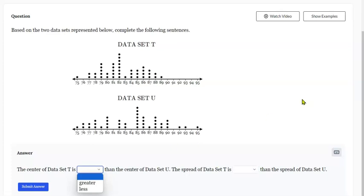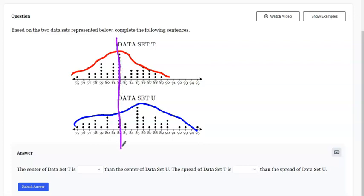When you look visually at data set T you can see the trend of the data. As we sketch here you can see the trend of that data and then we can see the trend of data set U. And they're asking us to compare the center. The center of data set T is around here and the center of data set U is really up in this area.